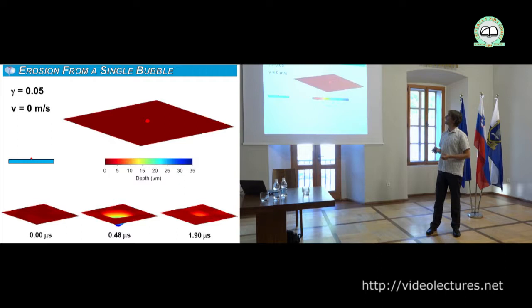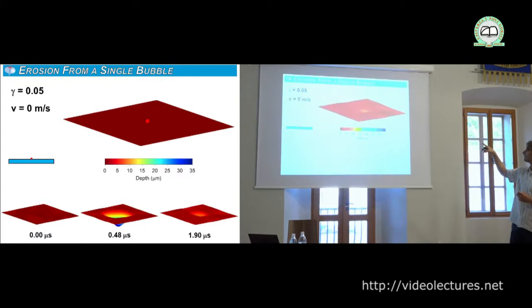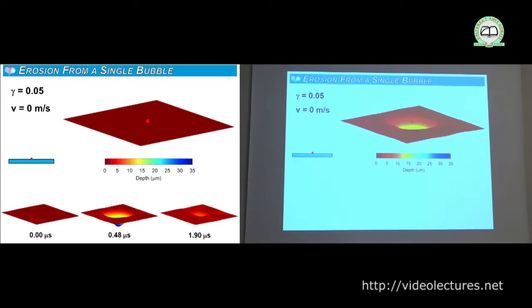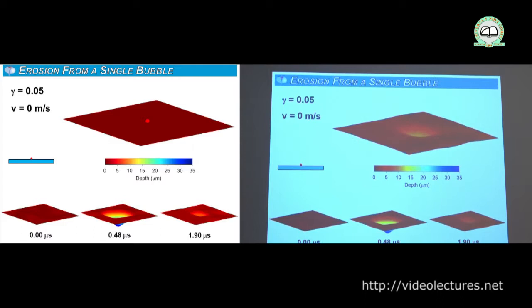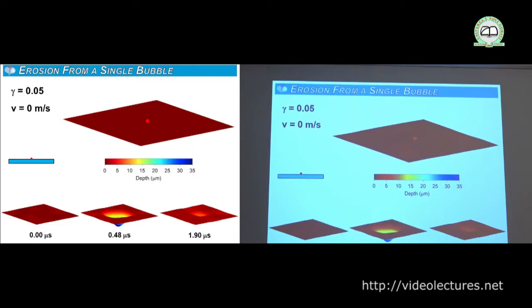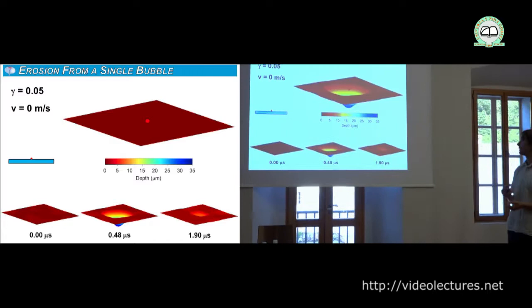Using a camera at 2 million frames per second — half a microsecond time resolution — we observed that when the bubble collapses, it creates a pit about 30 microns deep. You can see elastic deformation, then plastic deformation, and then relaxation afterwards. We can observe plastic and elastic deformation and relaxation, which nobody was able to measure until basically last week.